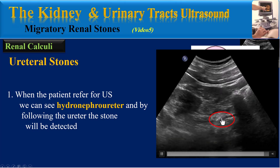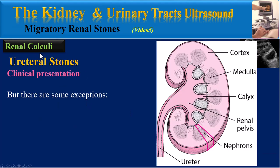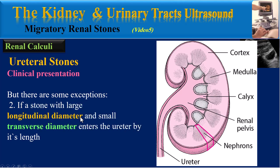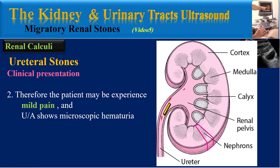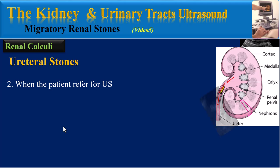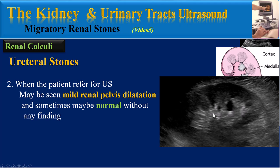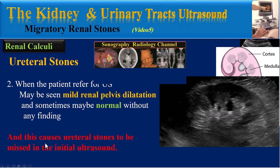There are some exceptions for ureteral stones. If a stone with a large longitudinal diameter and small transverse diameter enters the ureter by its length, there is no obstruction and urinary flow would pass. The patient may experience only mild pain and macroscopic hematuria on urinalysis. When the patient presents for ultrasound, there may be only mild renal pelvis dilatation or sometimes a normal exam — and this causes ureteral stones to be missed on initial ultrasound.